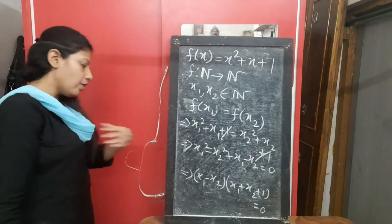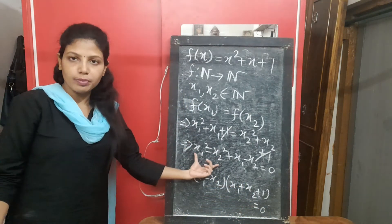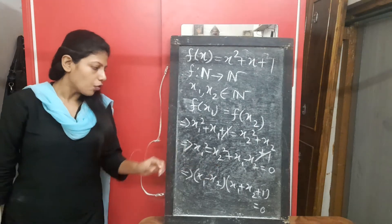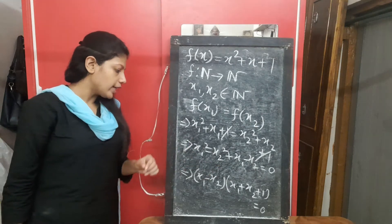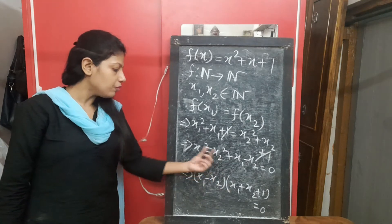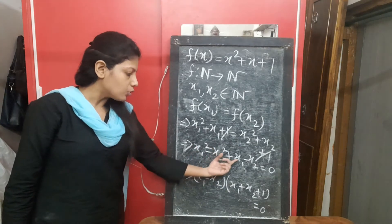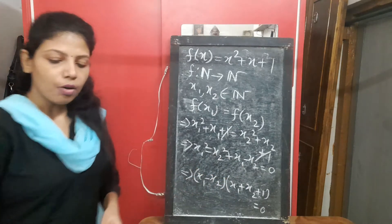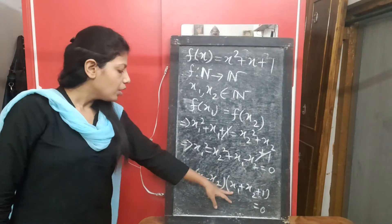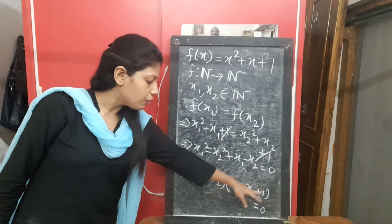I am repeating once more. Factorizing using the a² - b² = (a+b)(a-b) formula. So I have taken common (x1 - x2), and what is left is (x1 + x2 + 1) = 0. Now from this second factor, it is clear that for no natural number will this condition hold.